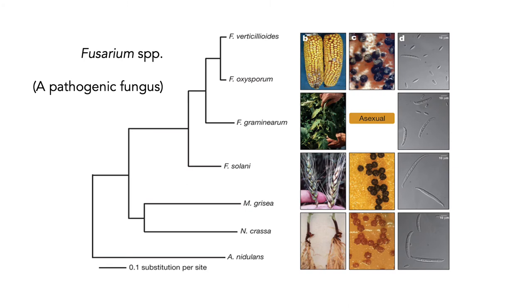This paper looks at a number of species of a fungal pathogen in the genus Fusarium. There's Fusarium solani, which is a pathogen of potatoes; Fusarium graminearum, which attacks wheat; Fusarium oxysporum, which attacks tomatoes; and Fusarium verticillioides, which tends to attack corn and maize.